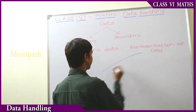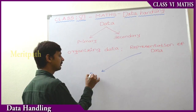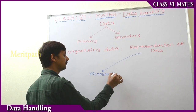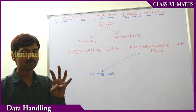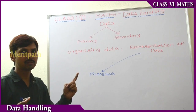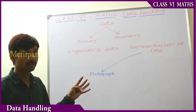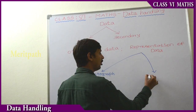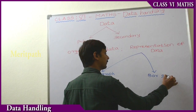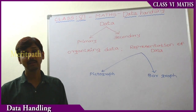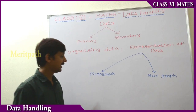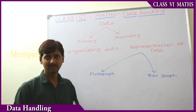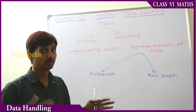We will present data into pictures — that is called a pictograph. We show particular information as a picture and call it a pictograph. We can also show information using rectangles, and then we call it a bar graph. In this class we will also learn about pie graphs. So we have pictograph and bar graph: pictographs represent data as pictures, and bar graphs use rectangles.